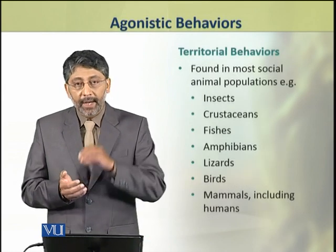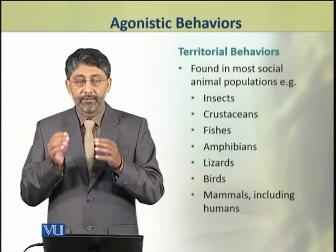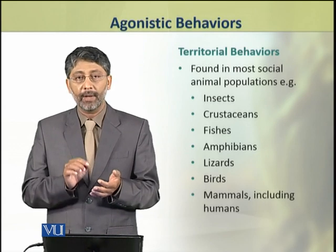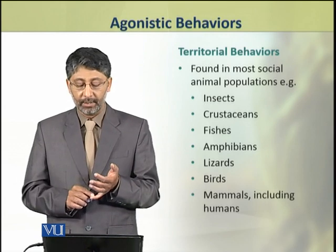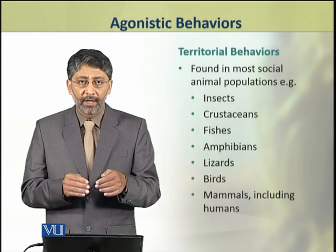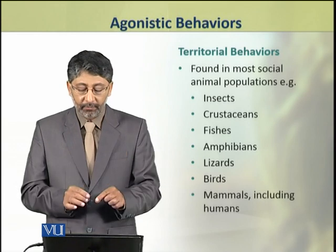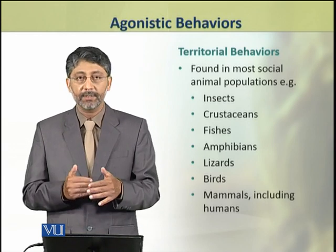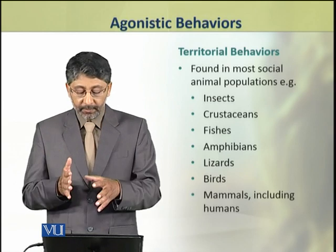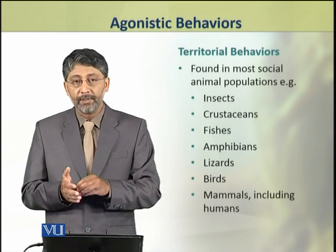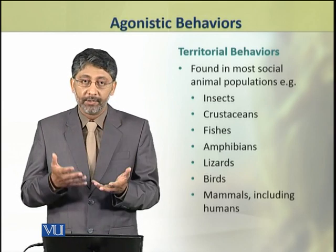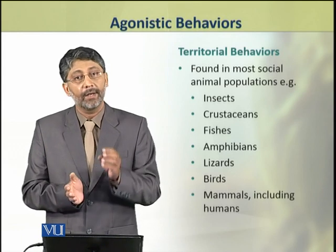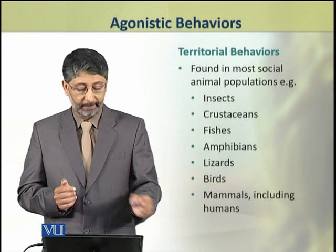The territorial behavior is found in most social animal populations. For example, territorial behavior is found in insects, crustaceans, fishes, amphibians, lizards, birds, mammals, and humans — all these types of animals exhibit territorial behavior.